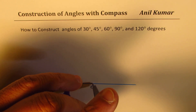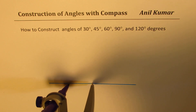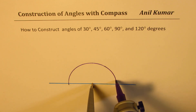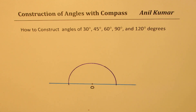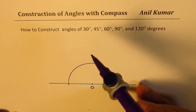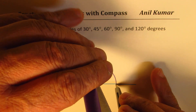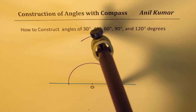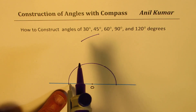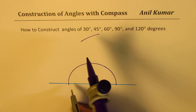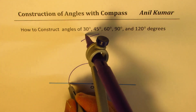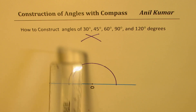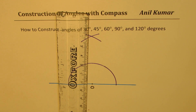We open up an arc on the compass and draw a semicircle. This arc cuts the line at two points. We place our compass on each of those two points and increase the size slightly, making two different arcs from each point that intersect each other.